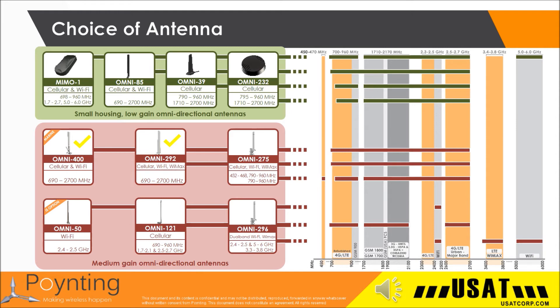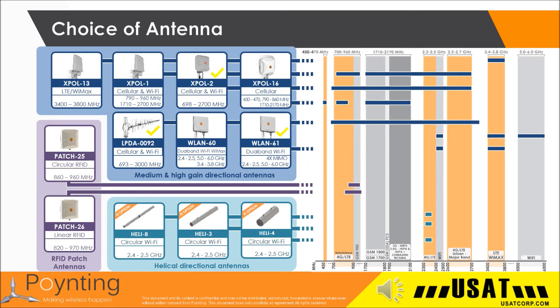There are two omnis on this list we feel are best in class for the US markets and we carry a lot of stock: the Omni-292 and the Marine Omni-400, along with several mounting bracket options. This is the same type of chart showing the directional antennas. The top row shows cross-polarized antennas which contain two antennas in one enclosure — necessary for MIMO and for maximum throughput. The LPDA log periodic dipole array is the highest gain antenna and you would need two of these to achieve MIMO. The three we have in volume stock are the LPDA-0092, the XPOL-2 for cellular, and the WLAN-61 — a 4x4 MIMO antenna that's dual band Wi-Fi in a single enclosure. This chart helps you zero in on a specific selection and then you would dive deeper into the actual spec sheets.